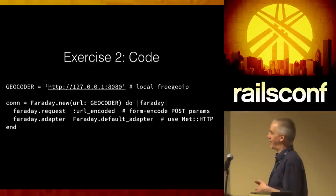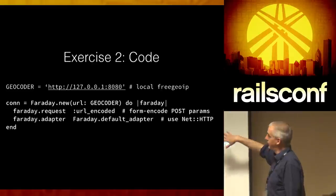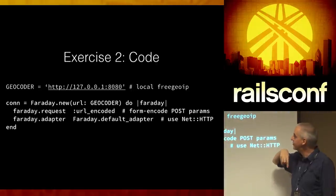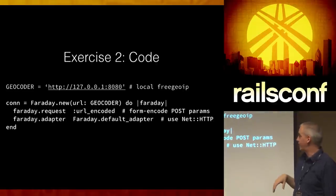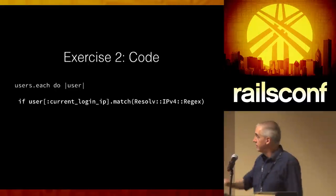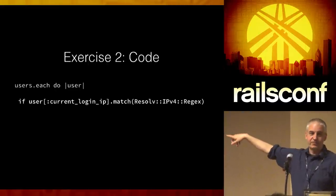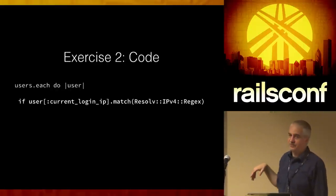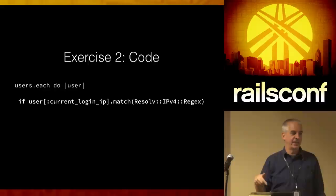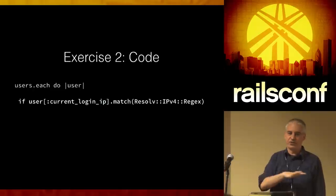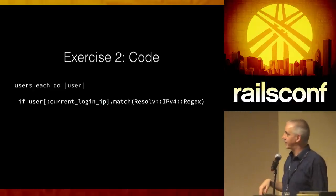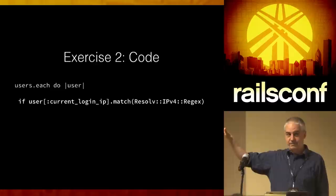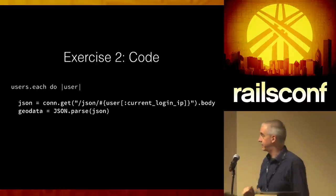Looking through the code in exercise two, this is all Ruby. We're going to set a geocoder for localhost, use Faraday to grab a request, grab the user, and make sure it's an IPv4 regular expression — that little bit filters out bad data. Our load balancer at Treehouse was misconfigured for a while, so some users had the load balancer's IP6 data in it, which is problematic both because it says it's coming from the load balancer and because IPv6 can be a problem with some libraries. So we throw away the bad data.